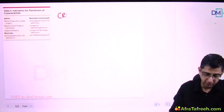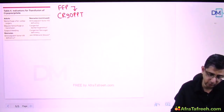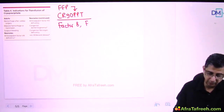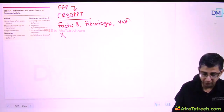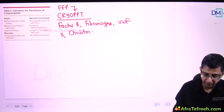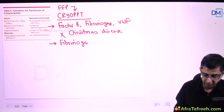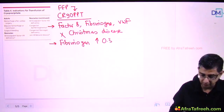The last component to remember is cryoprecipitate, which is produced by thawing fresh frozen plasma. The components of cryoprecipitate are factor 8, fibrinogen, and von Willebrand factor. MCQs may ask which clotting factor it does not contain - the answer is factor 9. Therefore, cryoprecipitate is not useful for management of Christmas disease, also called hemophilia B. The main advantage is that it provides fibrinogen, which increases by approximately 0.3 to 1 gram per unit of cryoprecipitate given.